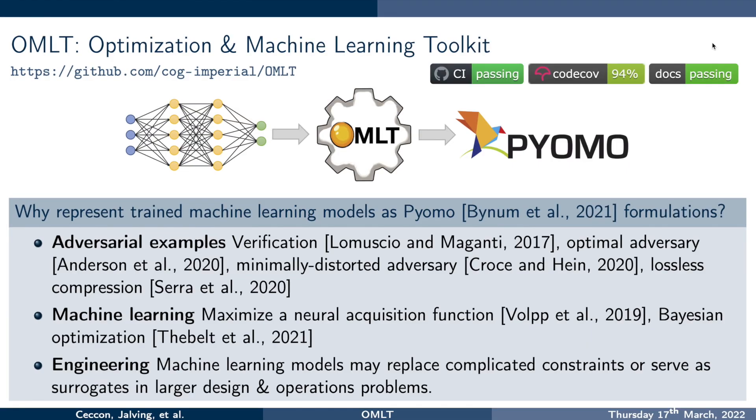So what is the optimization and machine learning toolkit? What it is, is it's something that takes trained neural networks or trained gradient boosted trees. These are machine learning models that have already been trained and it transforms these already trained machine learning models into PyOMO code. PyOMO is an algebraic modeling language that helps us represent optimization problems and then easily pass the optimization problems on to solvers.